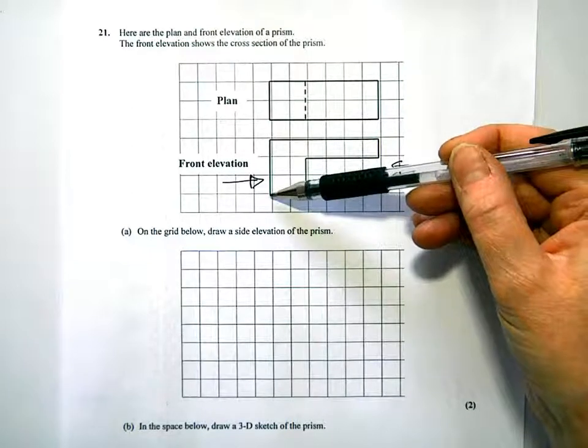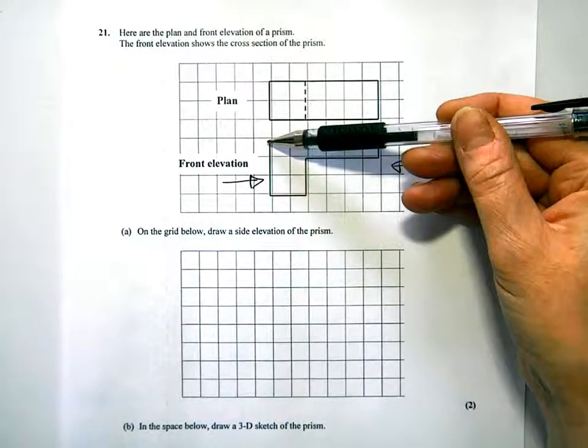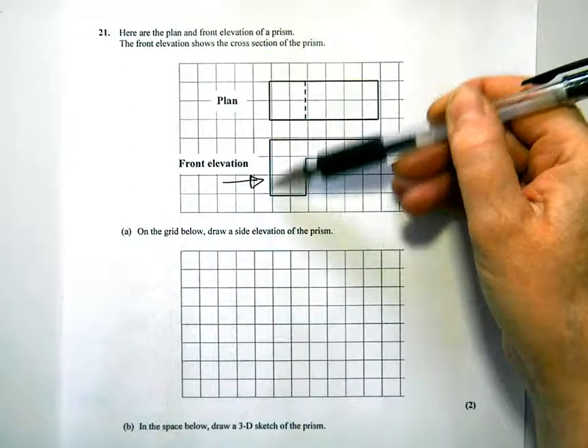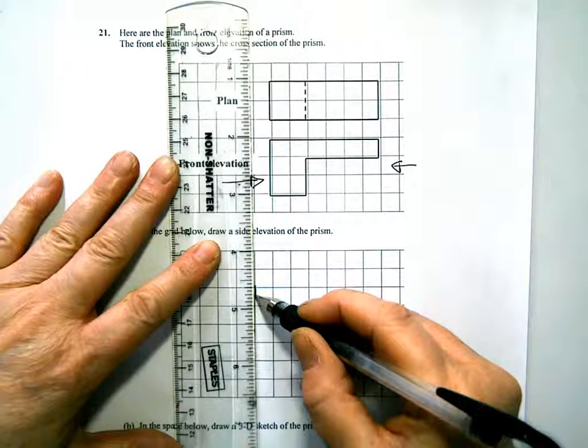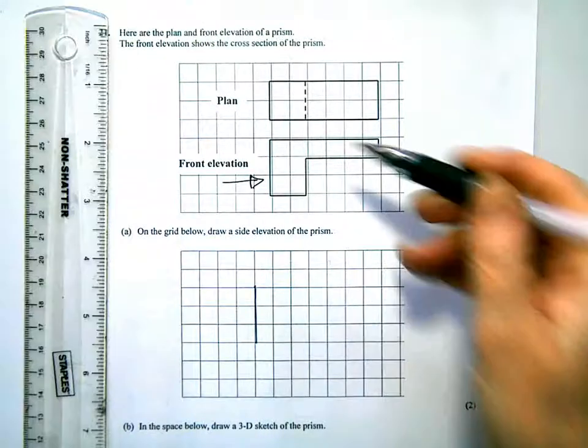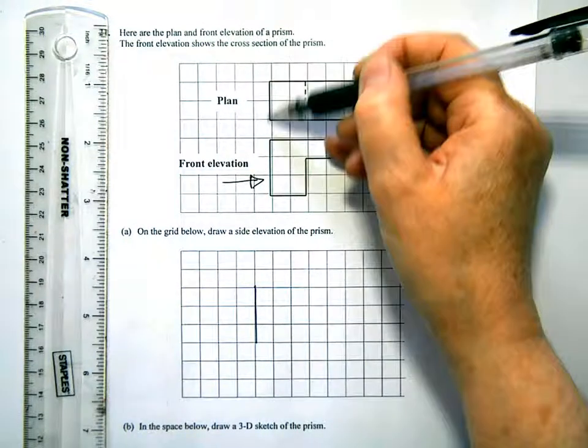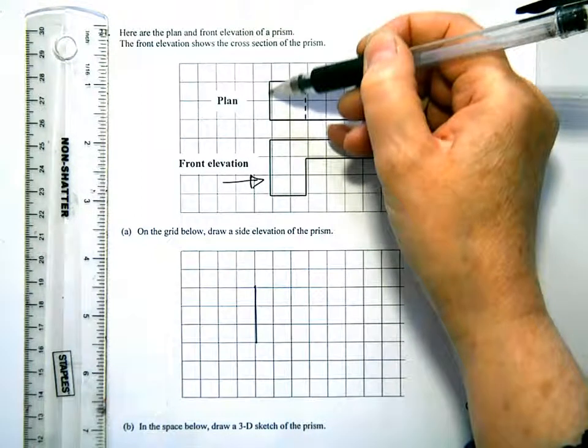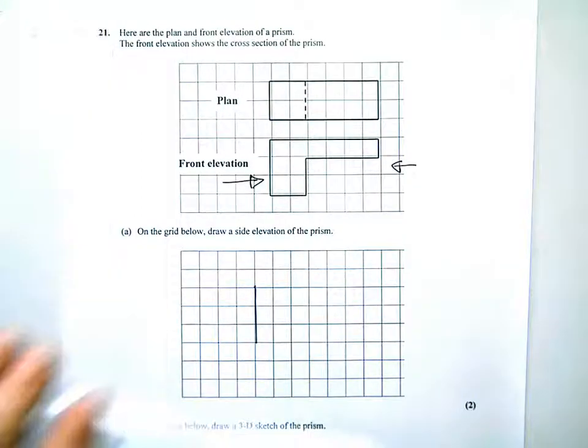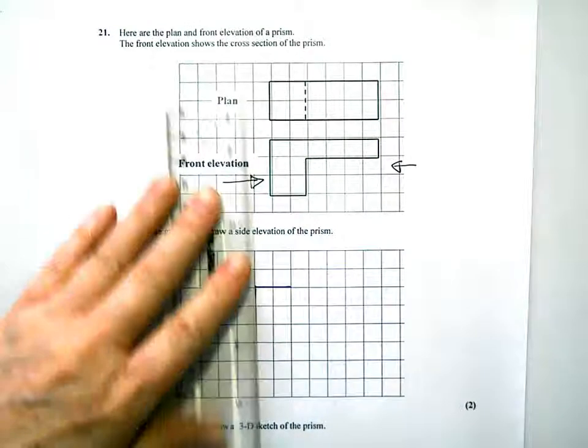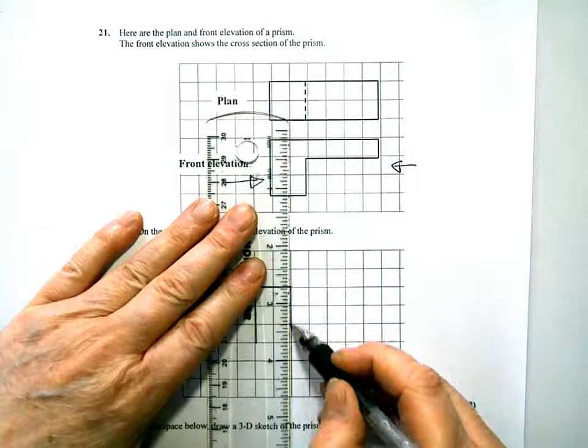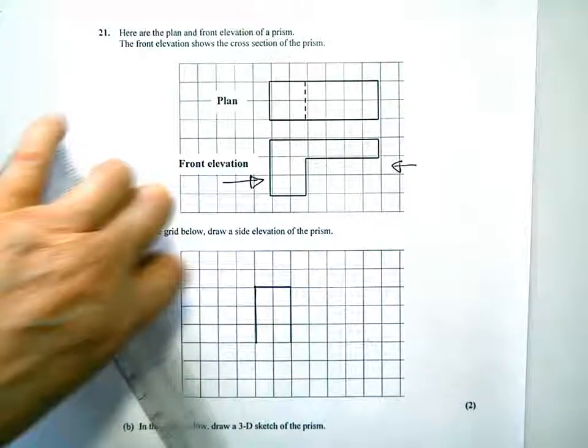So it's going to be a height. You're going to see the height three squares. And it's going to show how far, how deep the prism is. So you're going to have two squares. So your side elevation from the left-hand side is going to be a rectangle.